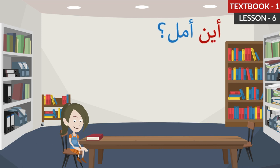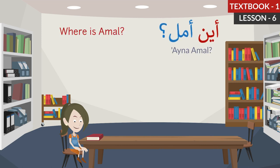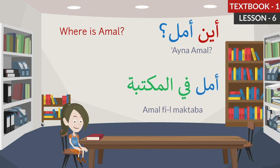The next one. Aina Amal? Where is Amal? Amal Philmakthaba. Amal is in the library. Let's repeat: Aina Amal? Where is Amal? Amal Philmakthaba. Amal is in the library.